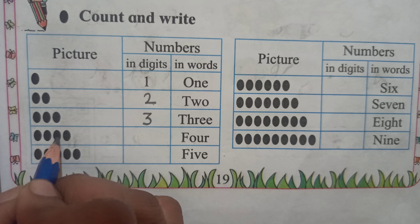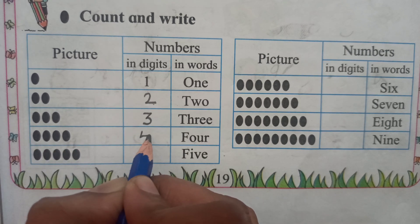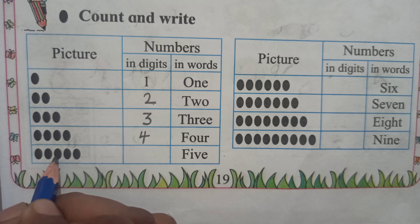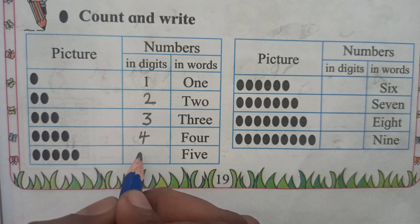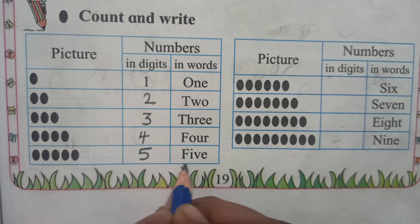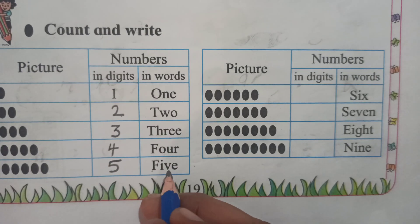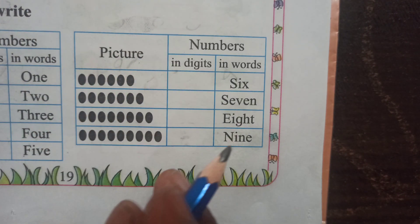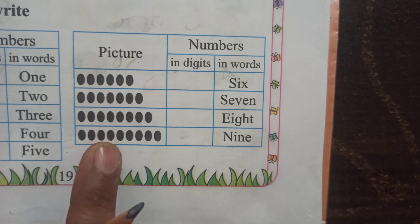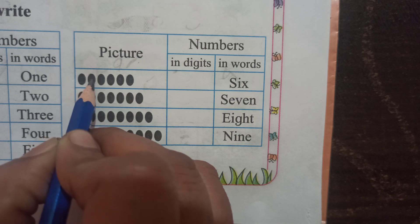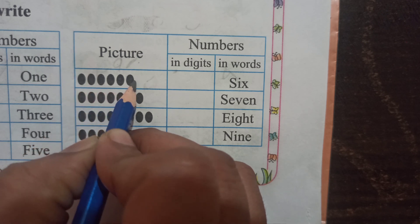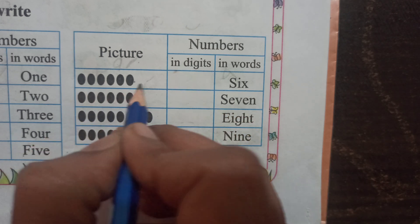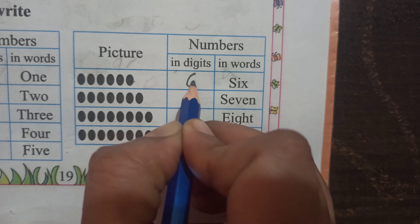Count one, two, three, four — so write four here. Spelling F-O-U-R. Then next — one, two, three, four, five pictures — so write five. Spelling F-I-V-E. Then see the next activity — pictures given here. Count one, two, three, four, five, six — write six in digit. How we write six — this type.